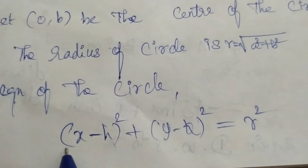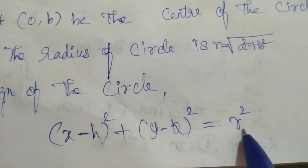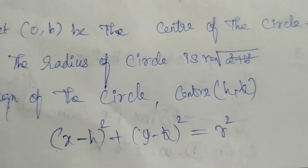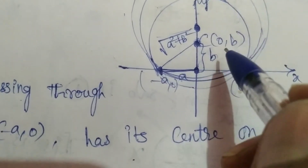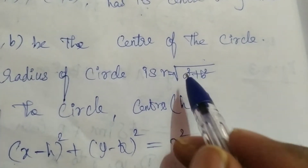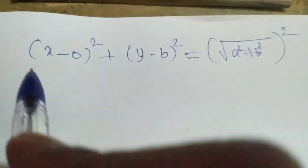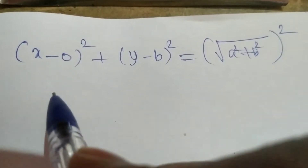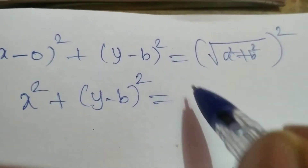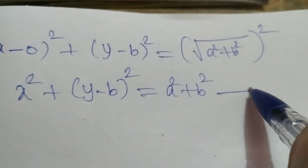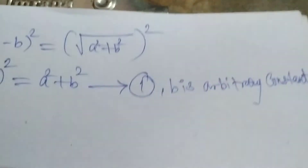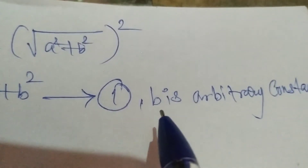The equation of a circle is (x − h)² + (y − k)² = r². Substituting center (0, b) and radius √(a² + b²), we get x² + (y − b)² = a² + b². This is equation number 1, where b is the arbitrary constant.